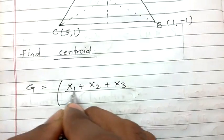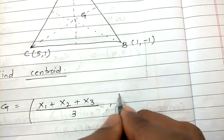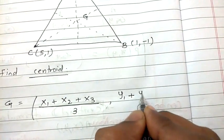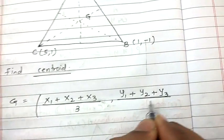plus x3 upon 3 comma y1 plus y2 plus y3 upon 3.